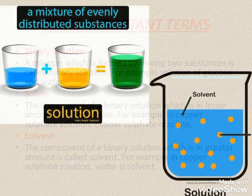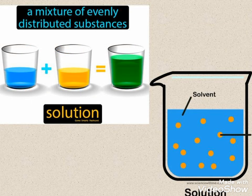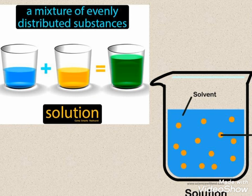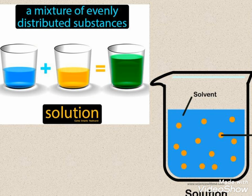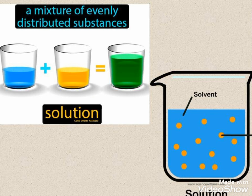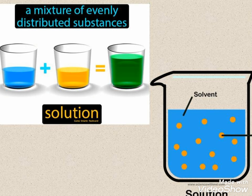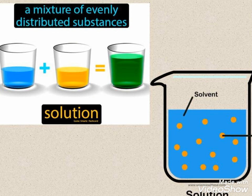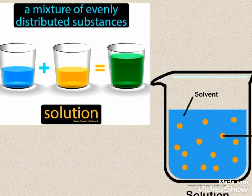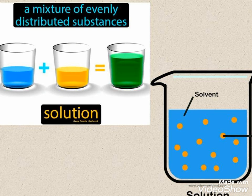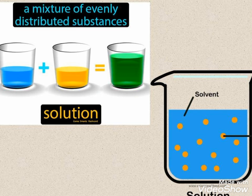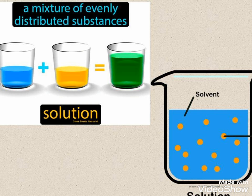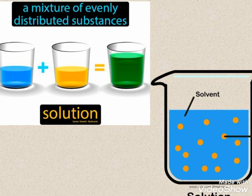Let us take the example of copper sulfate solution. The blue solution in the beaker is that of copper sulfate. Copper sulfate is the solute and water is the solvent. When copper sulfate dissolves in water, it distributes uniformly throughout. In a solution, there are two different types of particles which are mixed thoroughly, and a mixture of evenly distributed substances forms a new solution. Solute and solvent are the two important components of a solution.